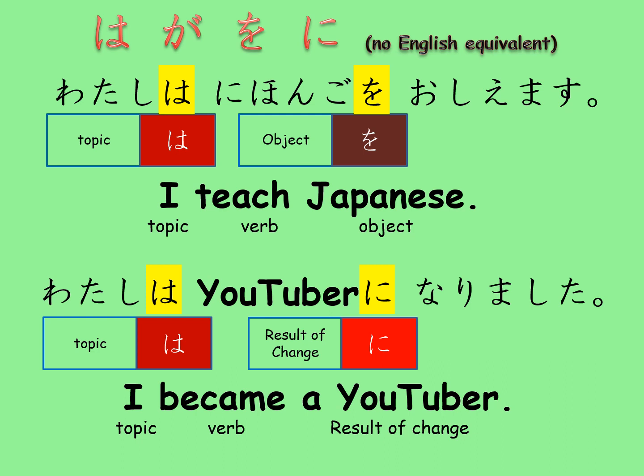The next sentence is 'watashi wa YouTuber ni narimashita,' meaning 'I became a YouTuber.' I wasn't a YouTuber before but now I am, so the YouTuber is the result of my change, and for that we use the particle ni. This particle ni is inevitably used with a verb that indicates change — 'naru' or 'narimasu' is the typical one. By the way, YouTuber is not an object in English either, so you cannot use o for that one.